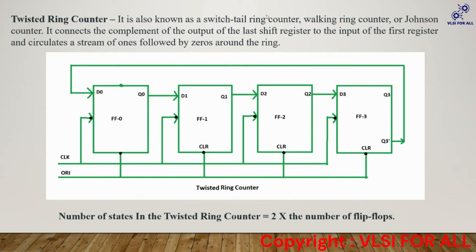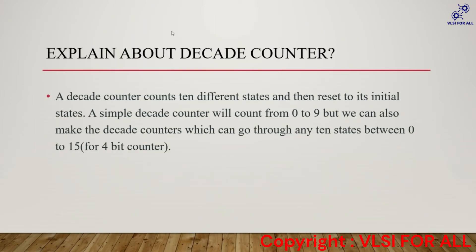The second type is the twisted ring counter, also known as the switch-tail ring counter, walking ring counter, or Johnson counter. Remember the name Johnson counter — it is very important and the most commonly used name. It connects the complement of the output of the last flip-flop to the input of the first flip-flop and circulates a stream of ones followed by zeros around the ring. In a twisted ring counter, the number of states is two times the number of flip-flops used — with four flip-flops we get eight states.